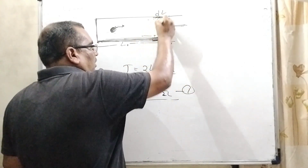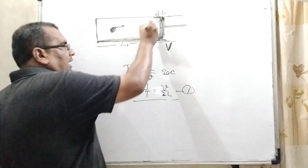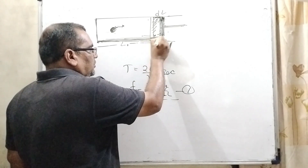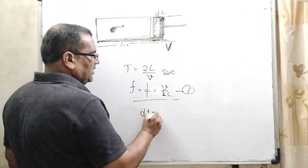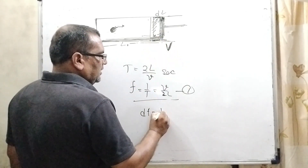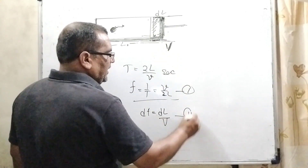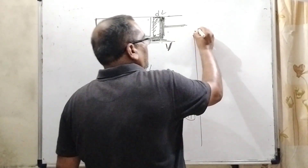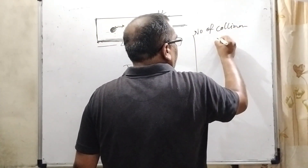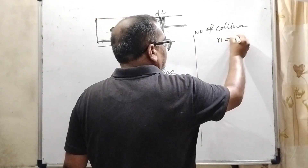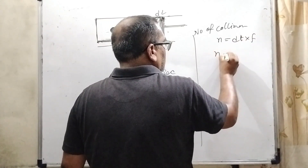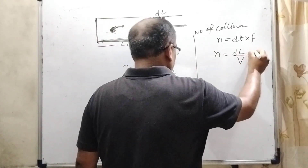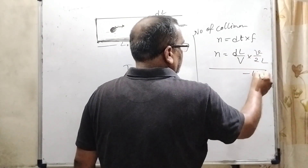The piston moves at speed V and covers a small distance dL. The time taken to cover dL is dT = dL/V. This is our second equation. In this time dT, the number of collisions N equals dT multiplied by the frequency. Substituting: N = (dL/V) × (v/2L). This is equation number three.